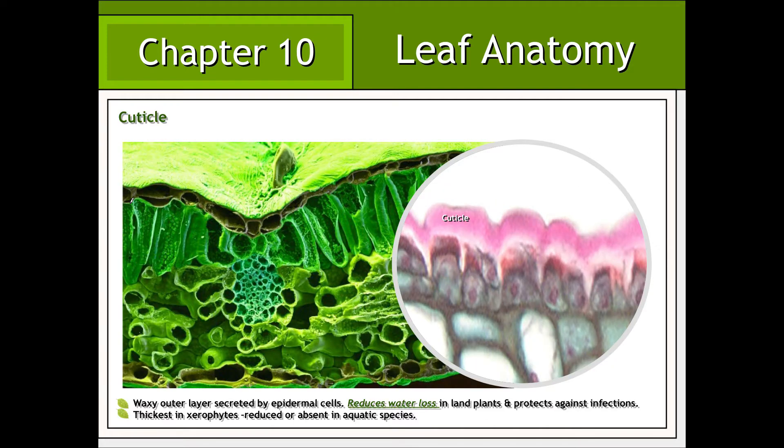The cuticle is a waxy secretion of the plant's epidermal cells, which is adapted for reducing water loss from the plant body. This waxy layer is especially critical for the survival of terrestrial or land plants. The thickness of the cuticle can vary depending on the environment in which the plant lives. It tends to be thinnest in aquatic species and thickest in xerophytes, or plants that are indigenous to arid environments.